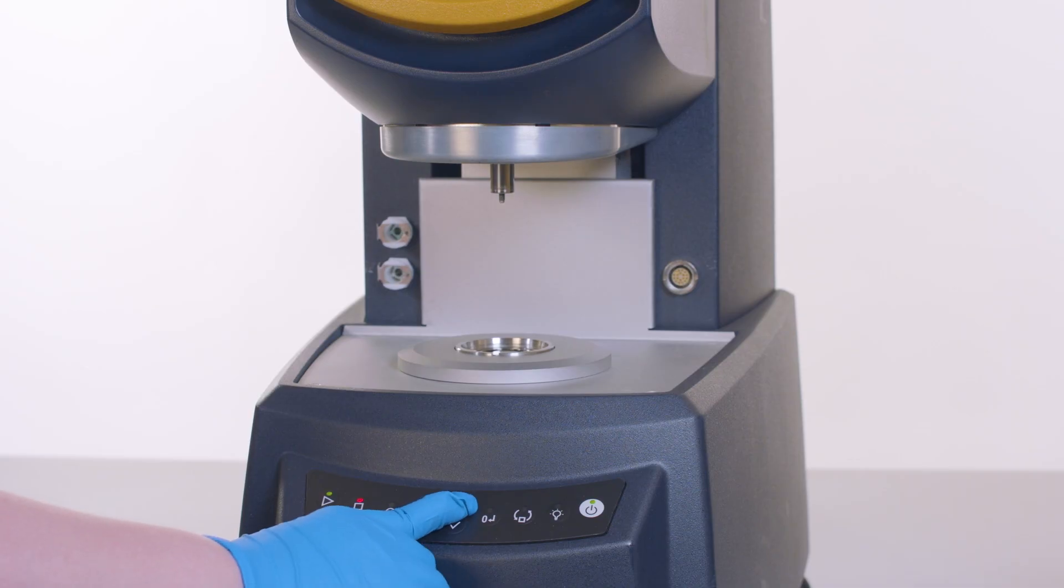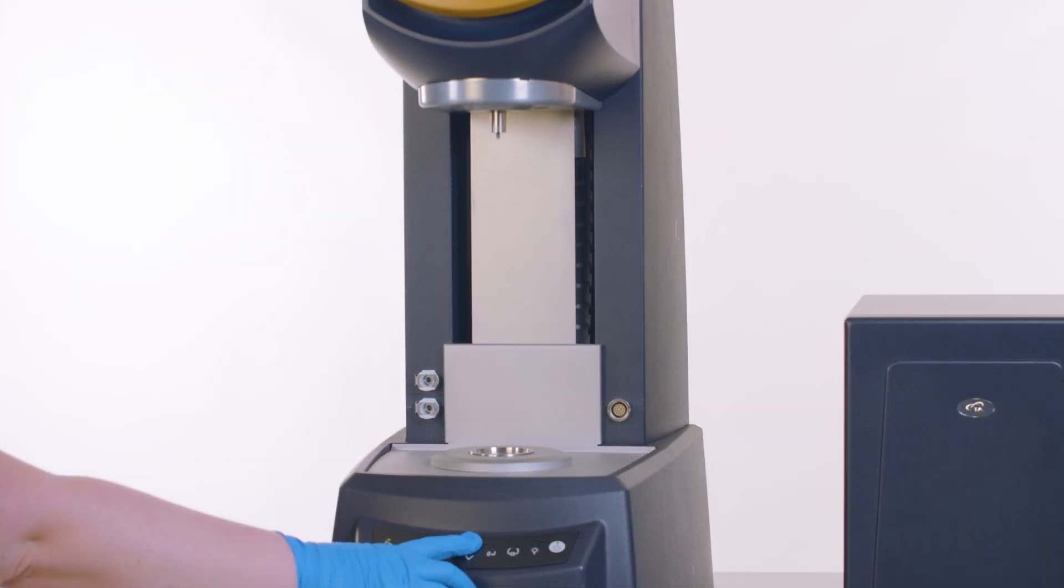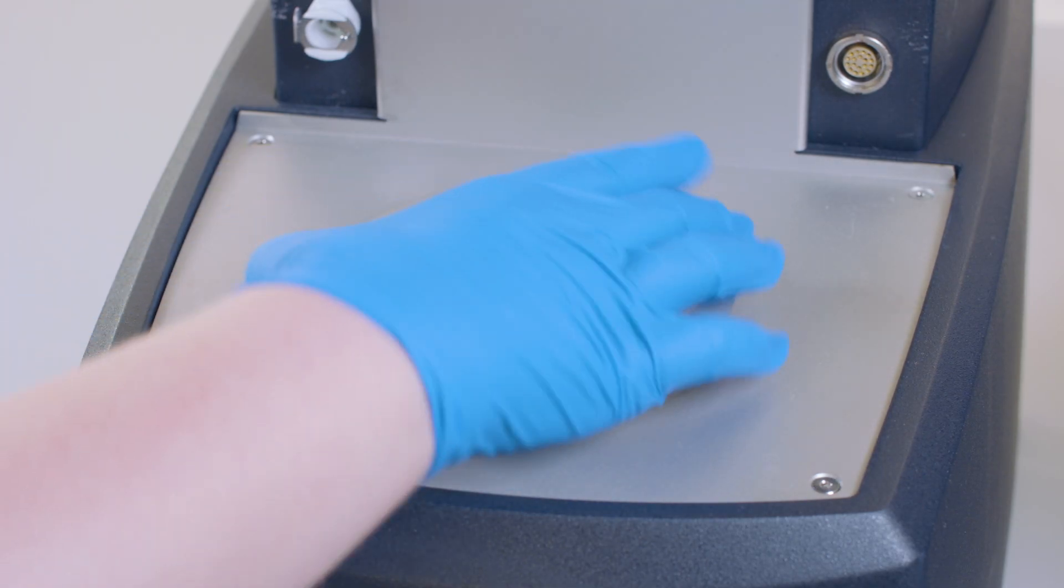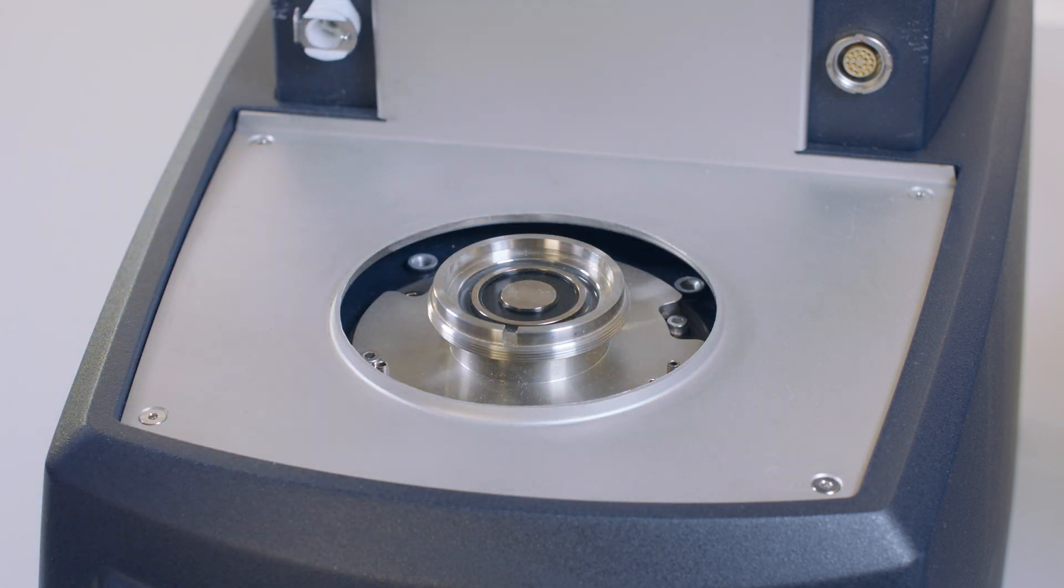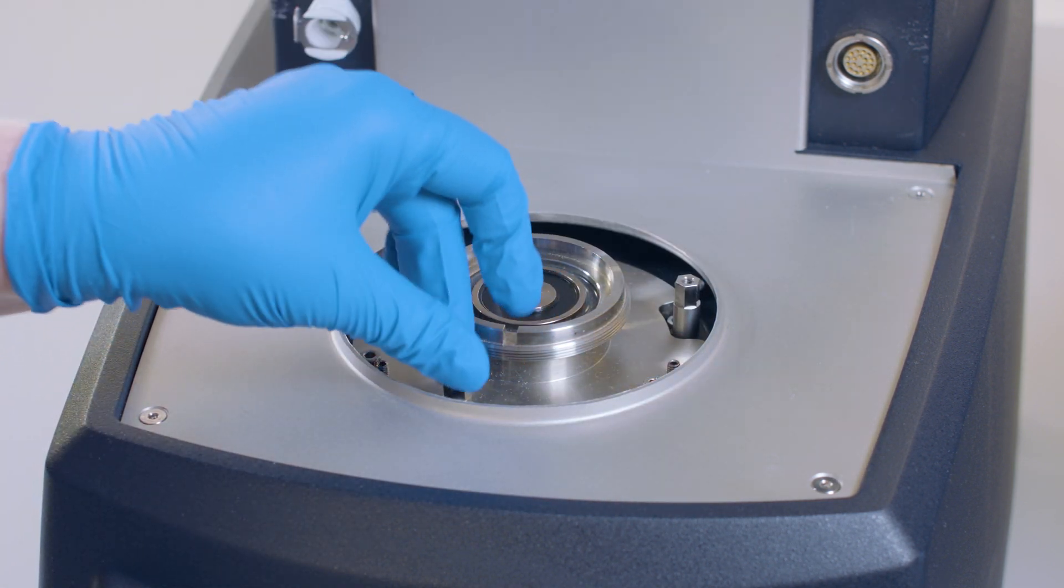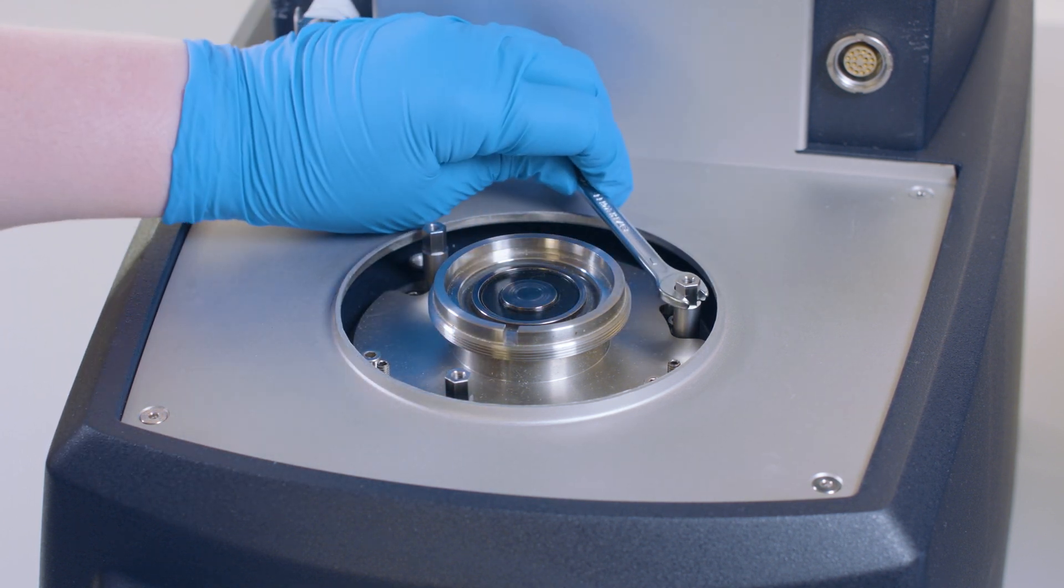To install the accessory on HR rheometers, raise the head to the maximum height. Unscrew the bottom cover and set aside. Screw the three support stands into the empty holes in the base. Gently tighten with the provided wrench.